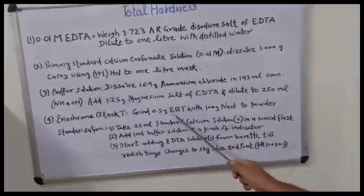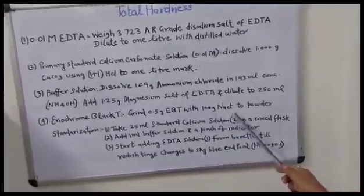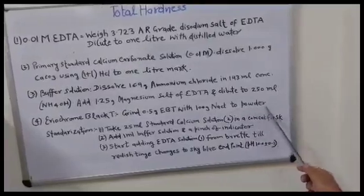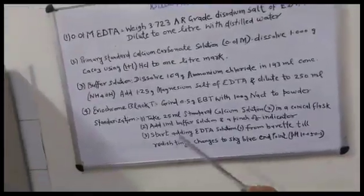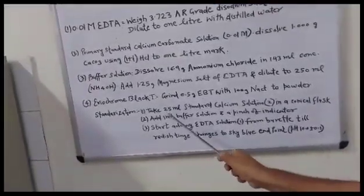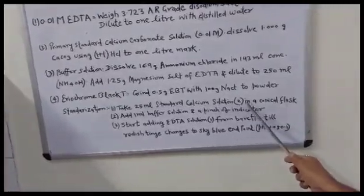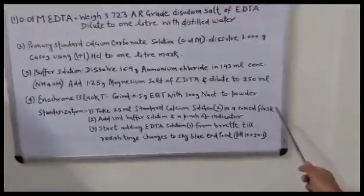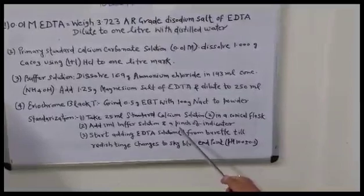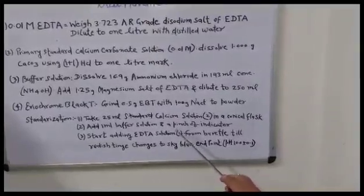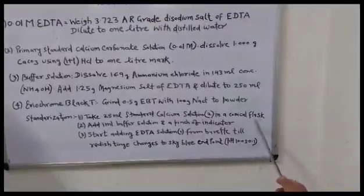Grind 0.5 gram of Eriochrome Black T with 100 gram NaCl to a powder. For standardization, take 25 ml standard calcium solution in a conical flask, add 1 ml buffer solution and a pinch of indicator EBT.